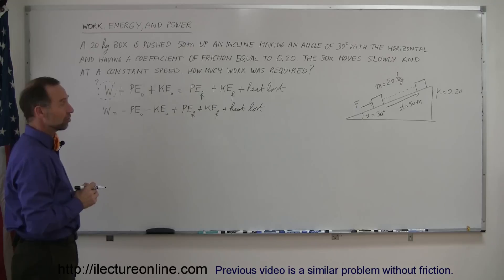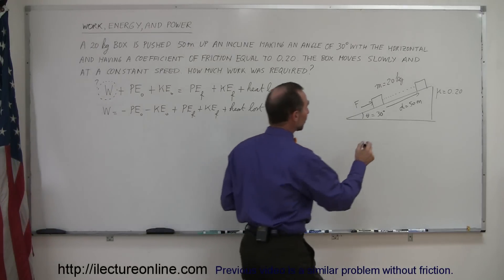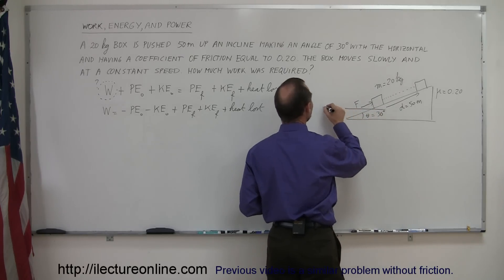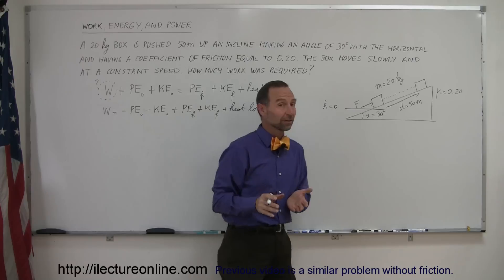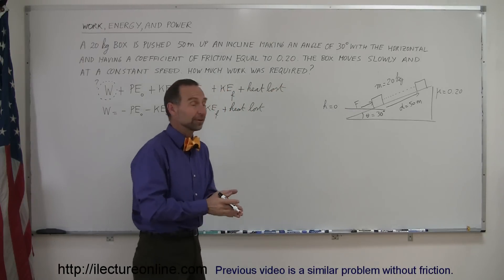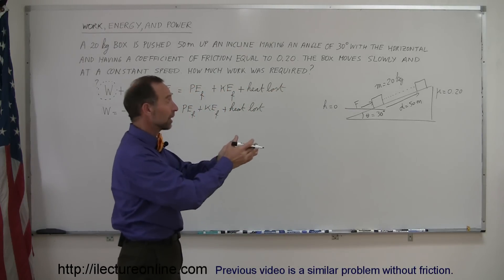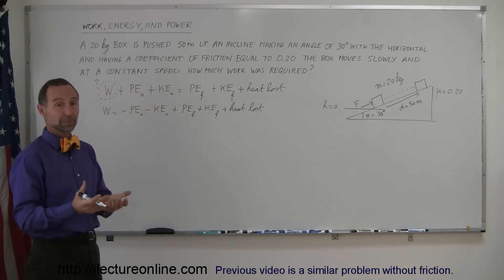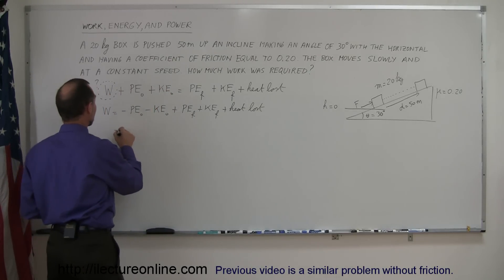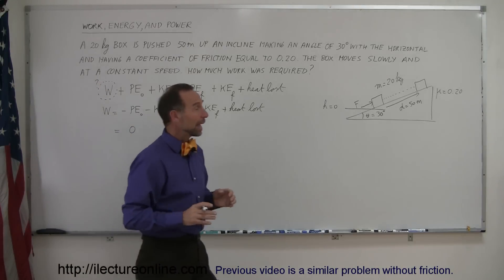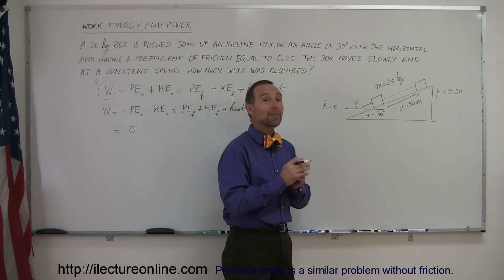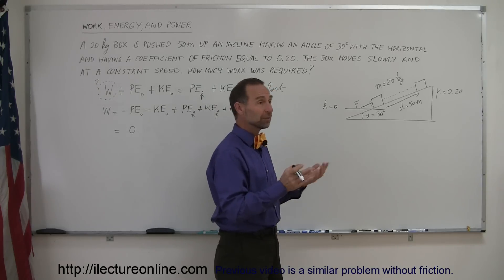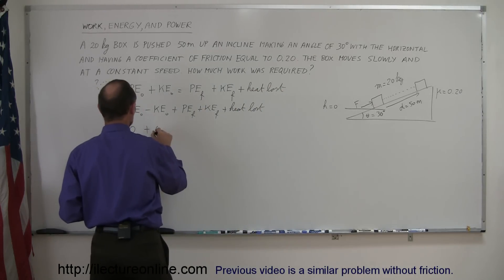Was there any initial potential energy? Well, if we assume that wherever the box started from, like from right there, we call that H equals zero. That's our reference side, that's where we started from, and we can arbitrarily call that zero. Doesn't matter if it's already part way up the incline, let's just call that zero height. So if it has zero height, that means there is zero potential energy, so we can say this is equal to zero. We can also assume that the box was not moving, or barely moving. So, if it's not moving, it doesn't have any kinetic energy, so initial kinetic energy is zero.